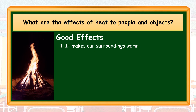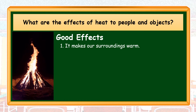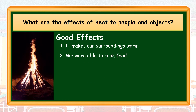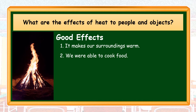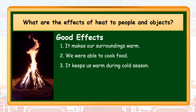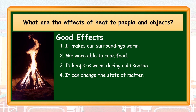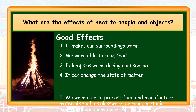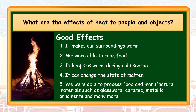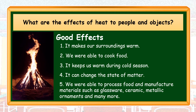Number 1, it makes our surroundings warm. Bonfires and heat warmers make the cold surroundings warm during winter season. Number 2, we are able to cook food. Cooked foods help us to digest food properly. Number 3, it keeps us warm during cold season. Heat helps us avoid a sudden drop in our body temperature during cold weather. Number 4, it can change the state of matter — for example, when ice turns into water. And number 5, we are able to process food and manufacture materials such as glassware, ceramic, metallic ornaments, and many more.